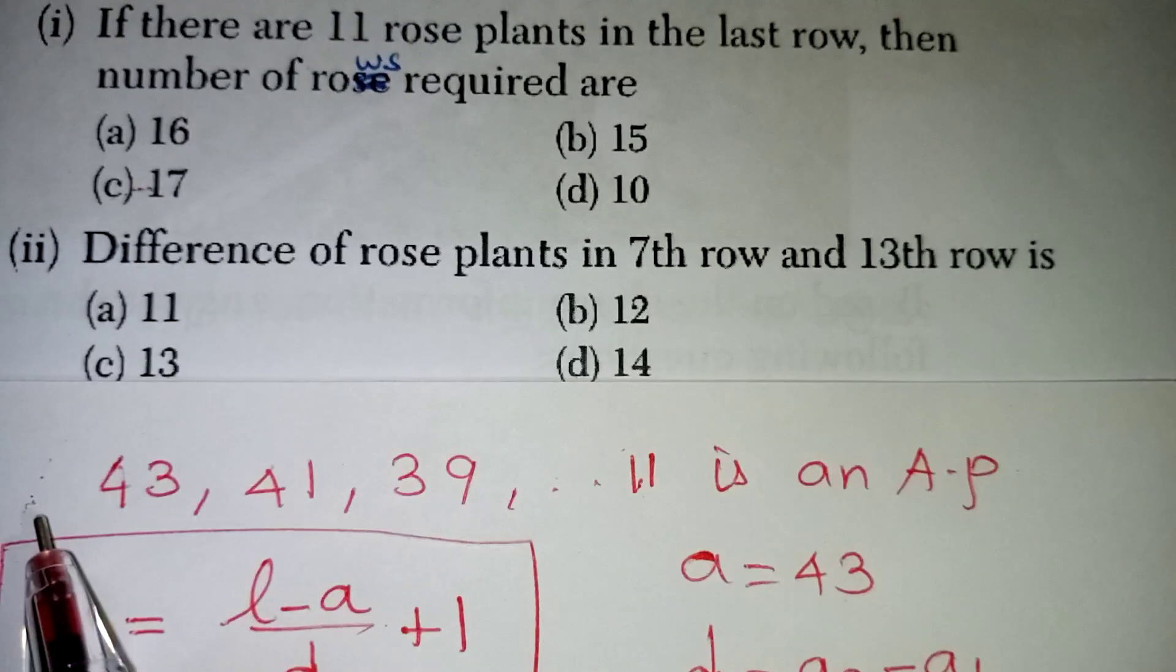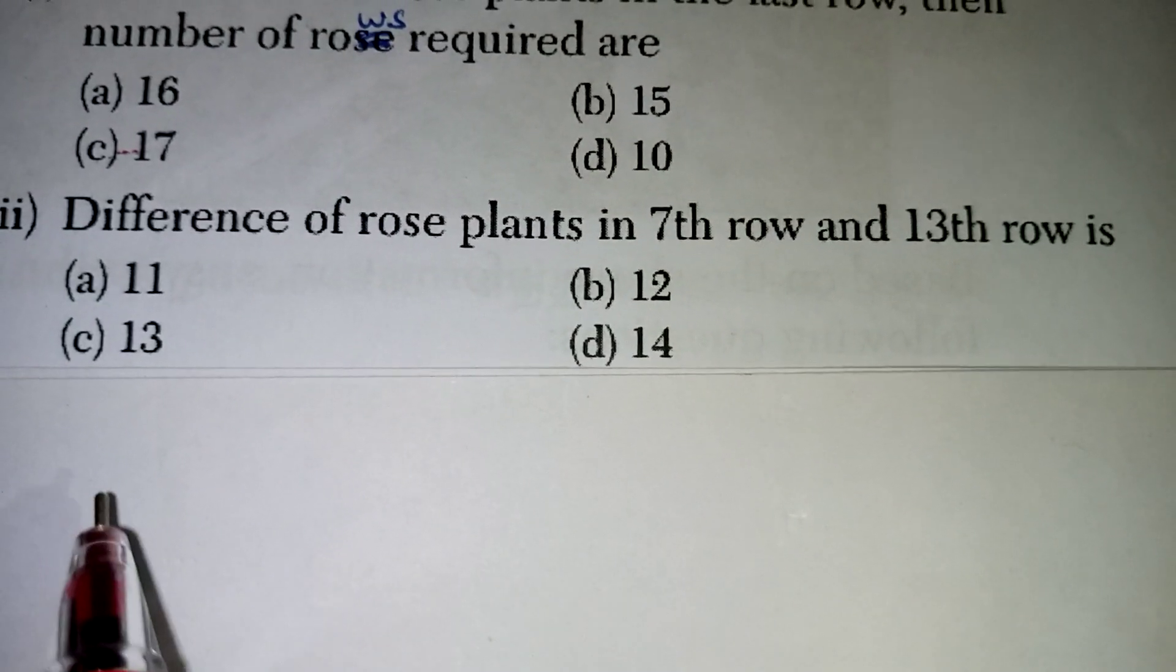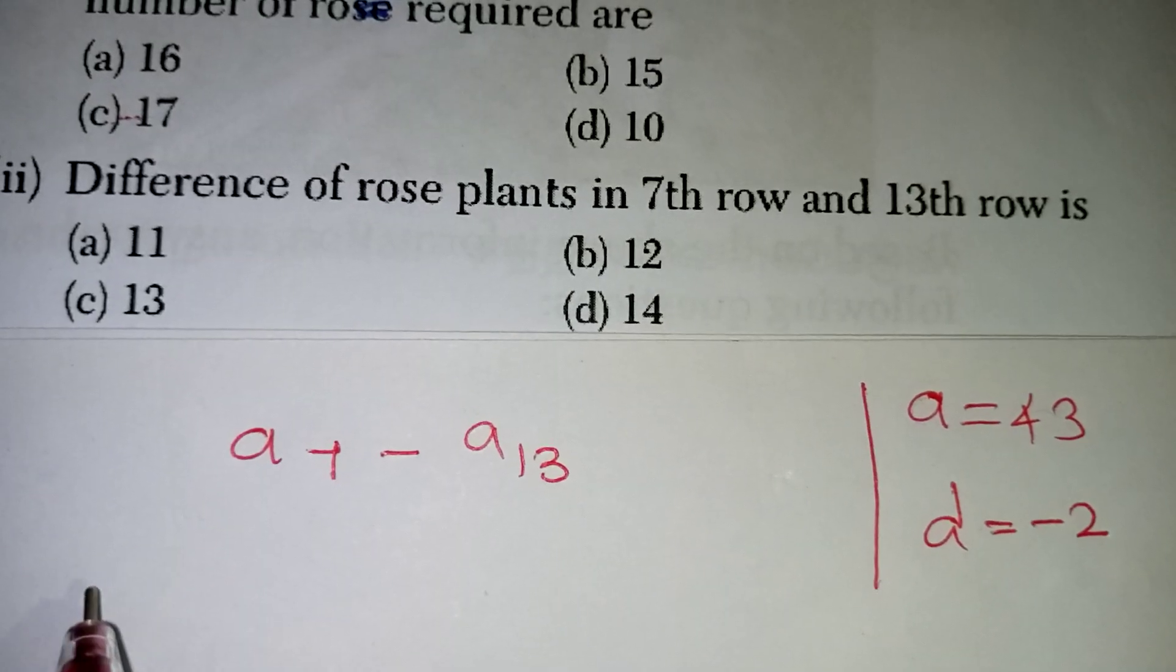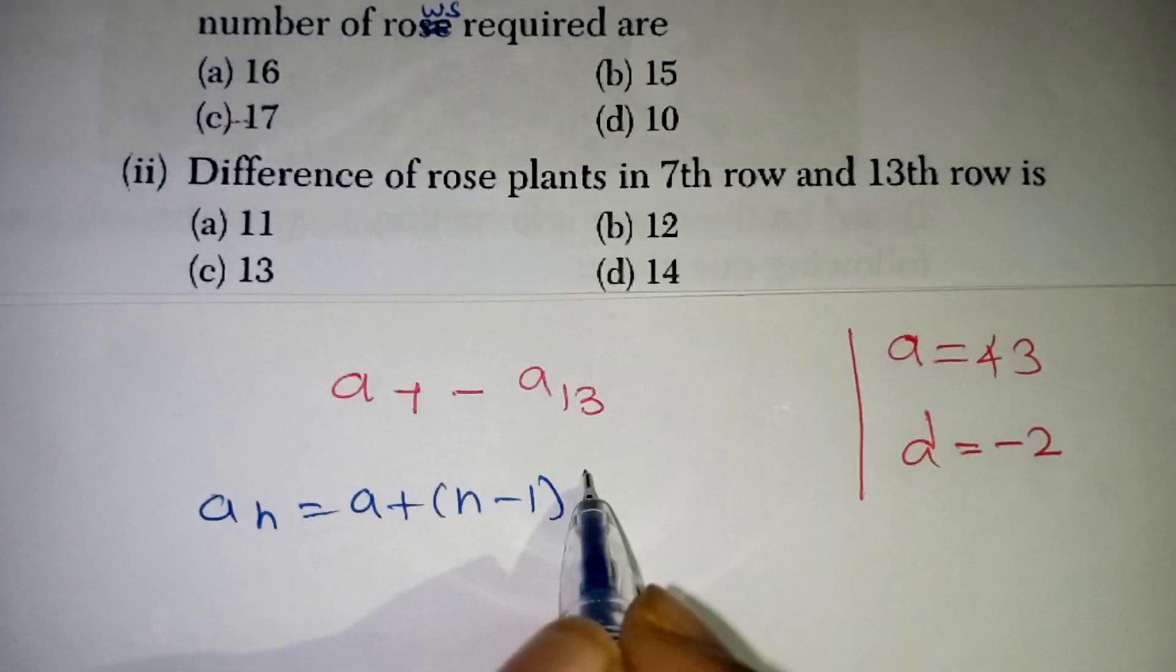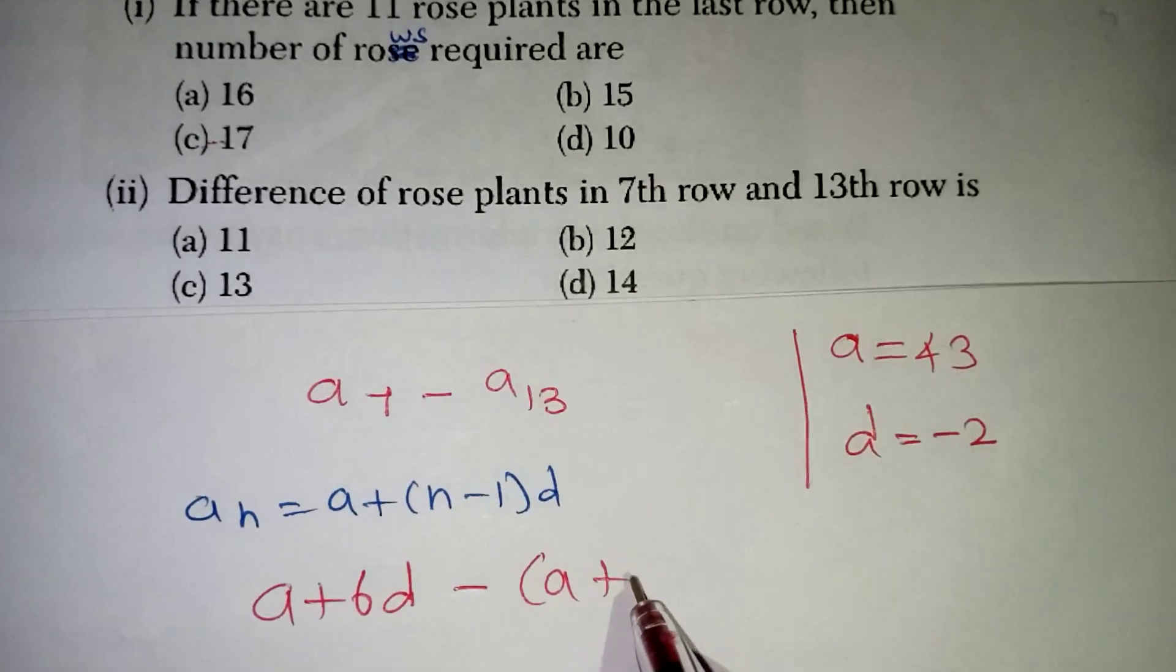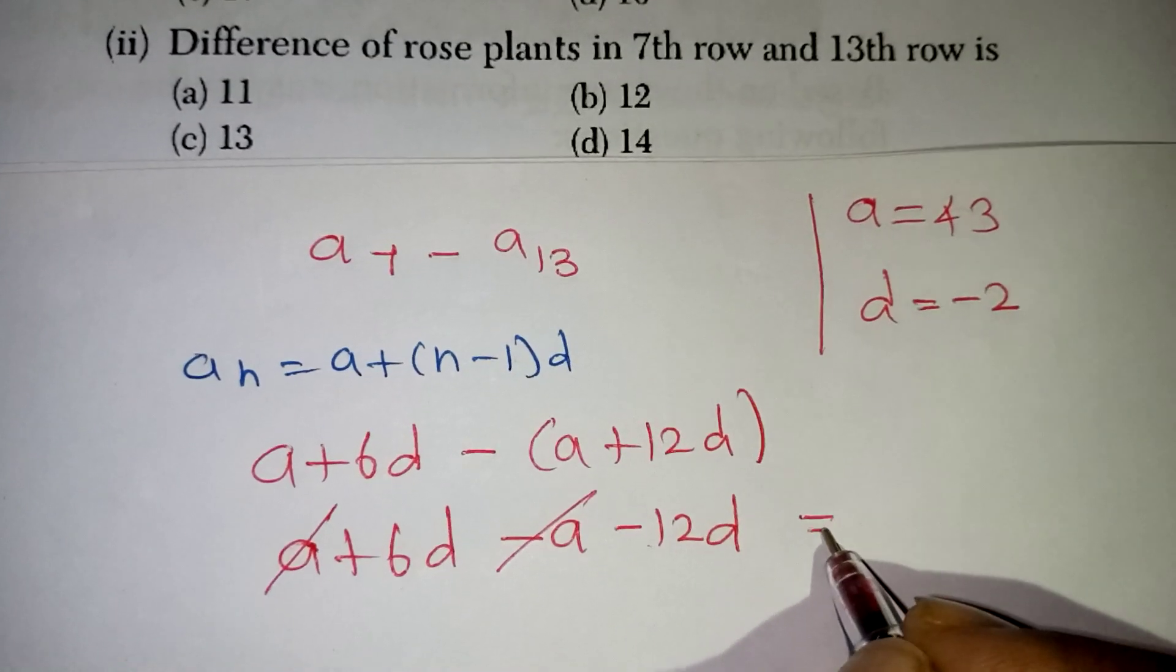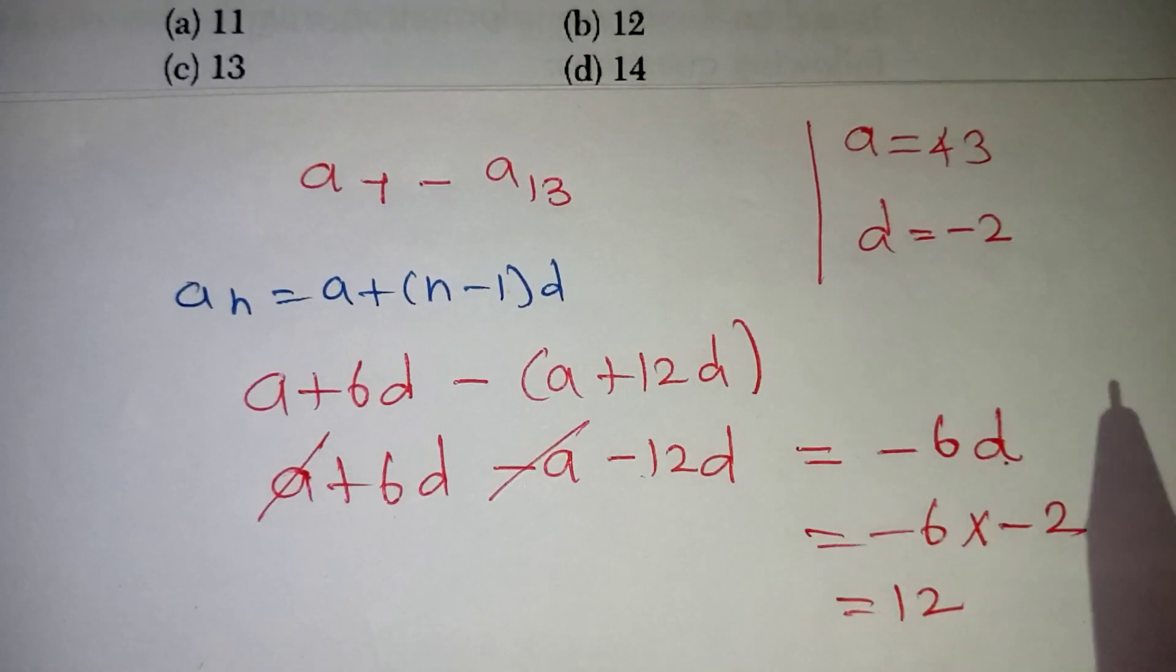Look at the next question. Difference of rose plants in the 7th row and the 13th row. So 7th row and 13th row difference they are asking. Very simply they are asking you to find out A7 minus A13. From the question, the first row is 43 and the difference is minus 2. Now A7 can be written as, we know the basic formula of AN. AN is equal to A plus N minus 1 into D. Now A7 will be written as A plus 6D, minus A13 which is A plus 12D. Now open the bracket. A plus 6D minus A minus 12D. Plus A and minus A will get cancelled. 6D minus 12D, if you subtract, minus 6D is coming. Now D value minus 2 from the question. So minus 6 into minus 2 will give you plus 12. So plus 12 is your correct answer, that is B option.